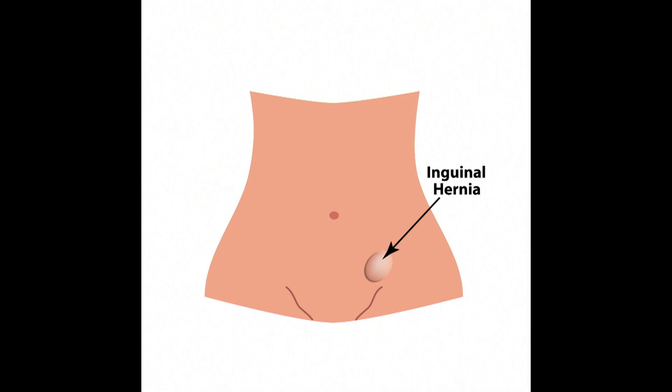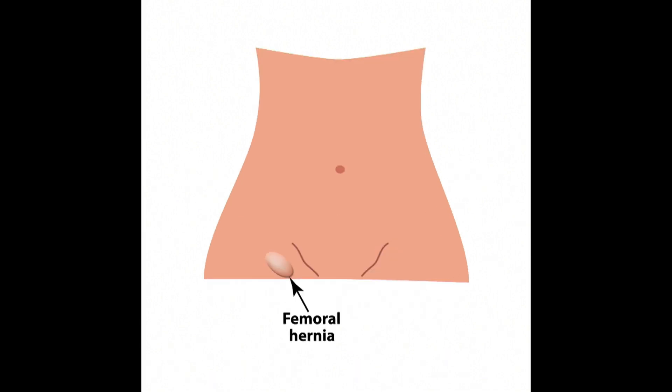Back to basics — a hernia is just a hole, just a defect. The next type is a femoral hernia. It's also in the groin but tends to be a little lower than the inguinal — usually below the inguinal ligament. Patients will notice either a bulge in the groin or just in the superior aspect of the thigh.